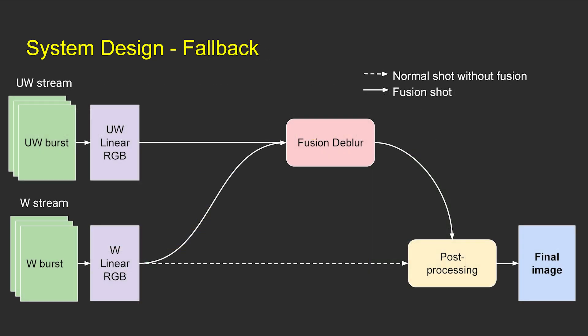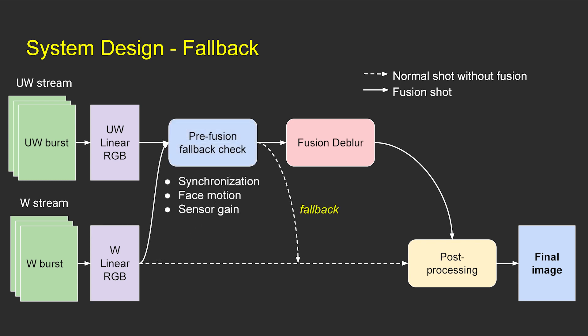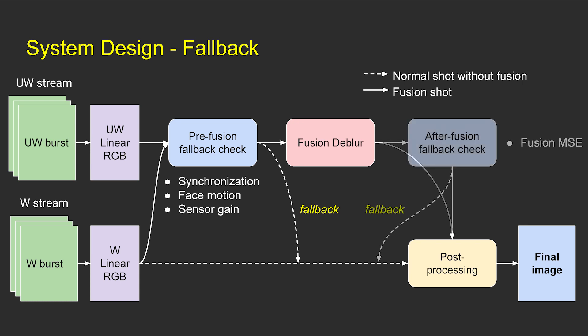We also design fallback mechanisms to ensure that we won't deliver images with any objectionable artifacts to users. Before fusion, we check the image metadata such as wide and ultra-wide synchronization, face motion from neighboring frames, and sensor gains to ensure that we have a good reference image for de-blurring. After fusion, we check the MSE between source and fusion images. If the MSE is too small, it means the improvement from fusion is not significant. If an image fails any of these checks, we will skip fusion and fall back to the source image.